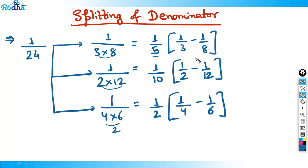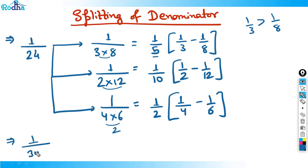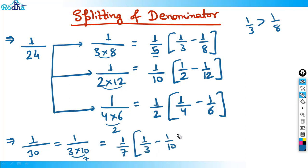This technique is basically helpful in solving series which are in fractions. One important rule: don't interchange here — since it's 1 by 3 into 8, where 1 by 3 is the bigger fraction and 1 by 8 is smaller, always do 1 by 3 minus 1 by 8, not the reverse. For example, 1 by 30 written as 1 by 3 into 10: difference is 7, so write 7 outside and then 1 by 3 minus 1 by 10.